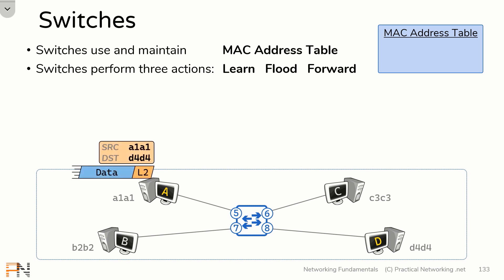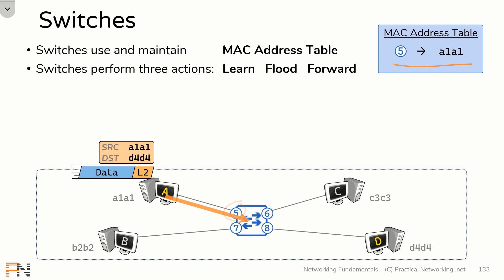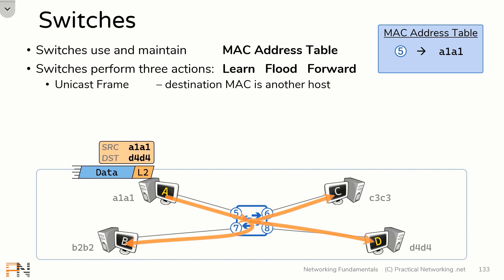In the last video we showed you how host A sent this frame to host D. When host A put that frame on the wire it arrived on port 5, which allowed the switch to learn this entry in its MAC address table, and then the switch had to flood this frame because it didn't know where the MAC address D4D4 existed. Now this frame was a unicast frame. The definition of unicast is a one-to-one communication and you can tell this is a unicast frame because the destination MAC is another host.